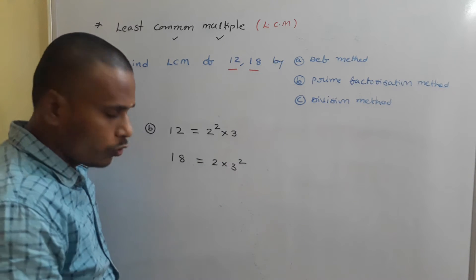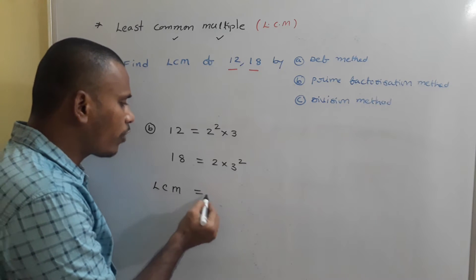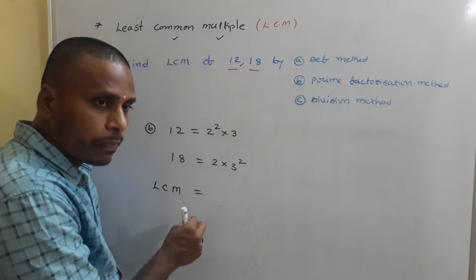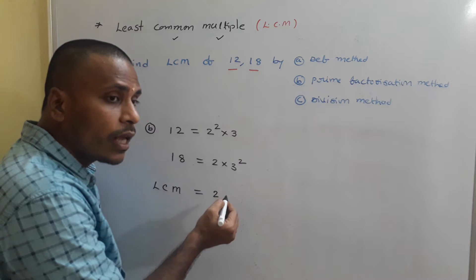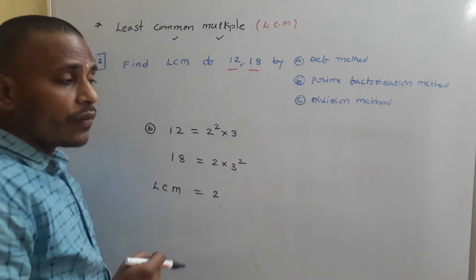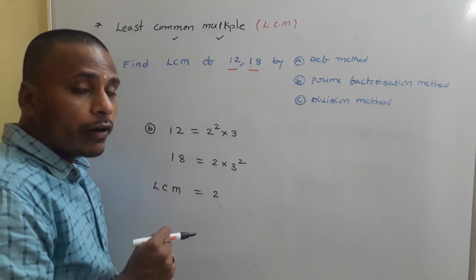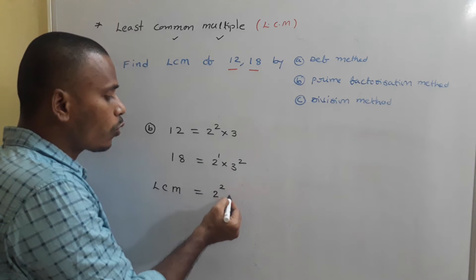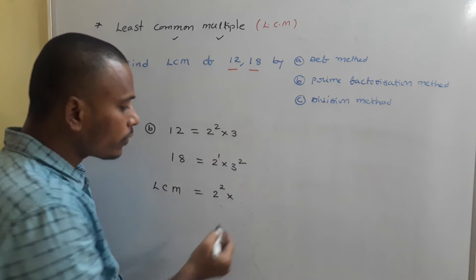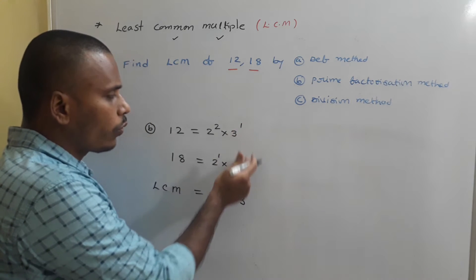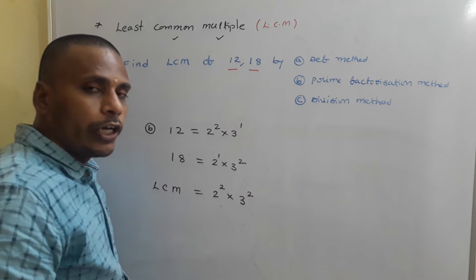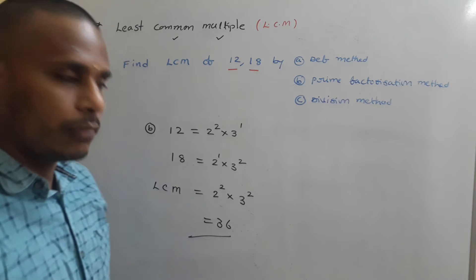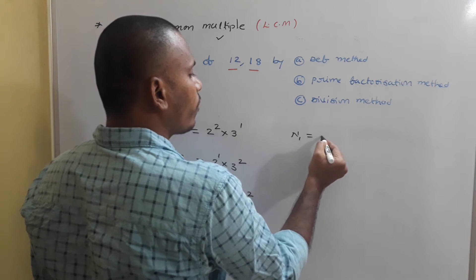To find LCM, we need to list every prime number with the highest power. Whereas for HCF we take the minimum power, for LCM we take the maximum power. For 2: powers are 2¹ and 2², so we take 2². For 3: powers are 3¹ and 3², so we take 3². Therefore LCM is 2² × 3² = 36.